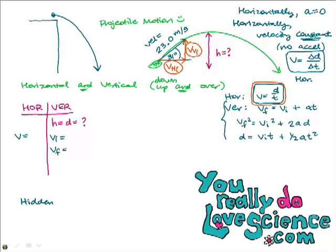What I mean by hidden zeros: in a word problem, some values are going to be zero, but the problem won't come out and say 'the final velocity in this problem is zero.' They'll just tell you the football's kicked, goes in an arch up and then down. It's up to you to know that when something is kicked up and then down, vertically speaking, if we separate the horizontal and vertical, the football's going up and then coming back down.